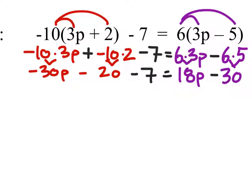Now that we have this we'll combine like terms on each side of the equal sign. On the right side we don't have any like terms so we're just going to leave that the way it is.